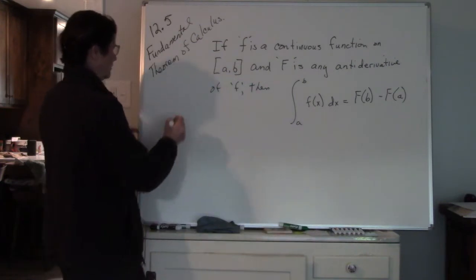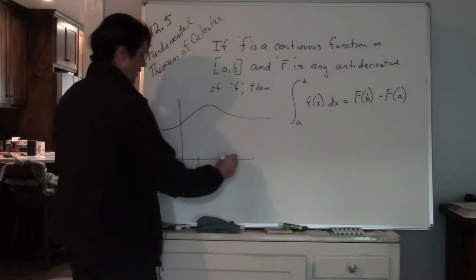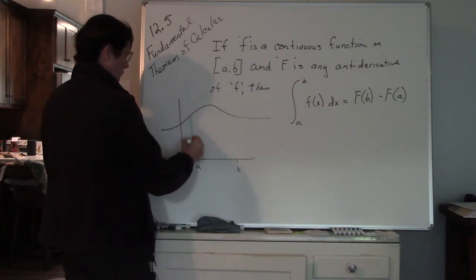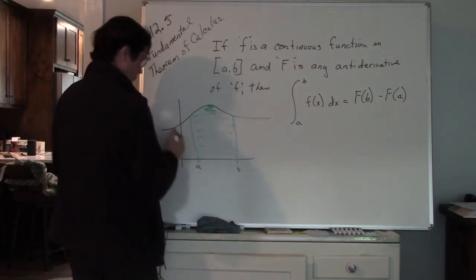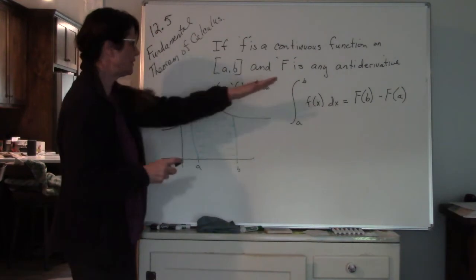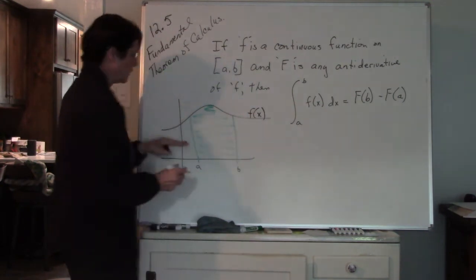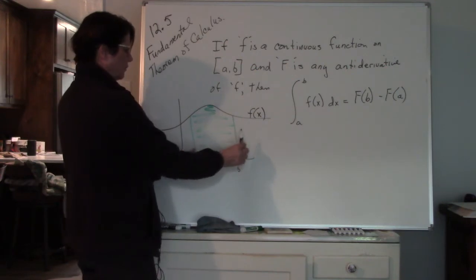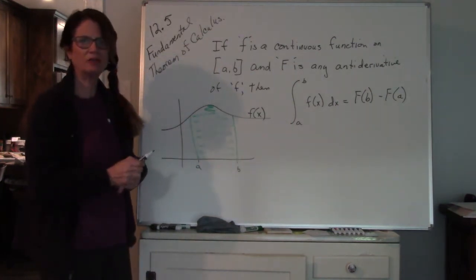Let me give you a picture of this. So if I had a function — here's my function, here's a, here's b — and I am looking for the area under this curve. What this is saying is when I find the antiderivative of this function, so this is my f of x function, all that is is the difference between the antiderivative of b, and I'm going to subtract off the antiderivative of a, and what I get is that area under the curve.